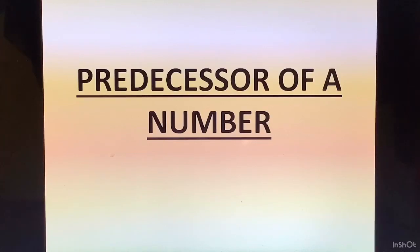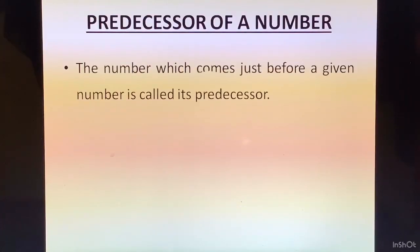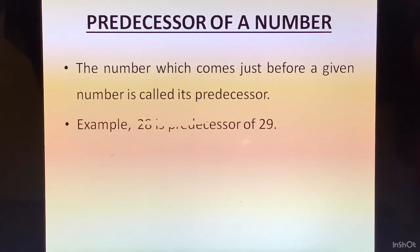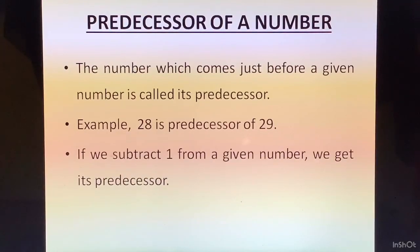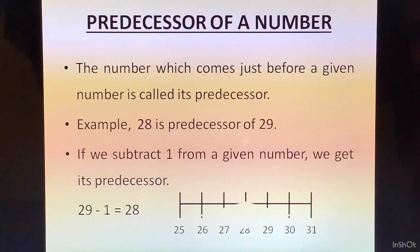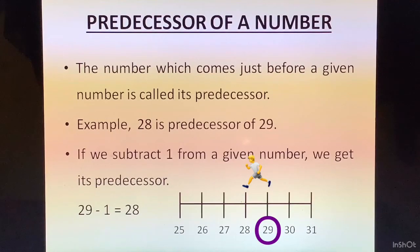Predecessor of a Number: The number which comes just before a given number is called its predecessor. For example, 28 is the predecessor of 29. If we subtract 1 from a given number we get its predecessor: 29 minus 1 is 28. On the number line, when we move backwards towards the left we get the predecessor — the number on the left is the predecessor.